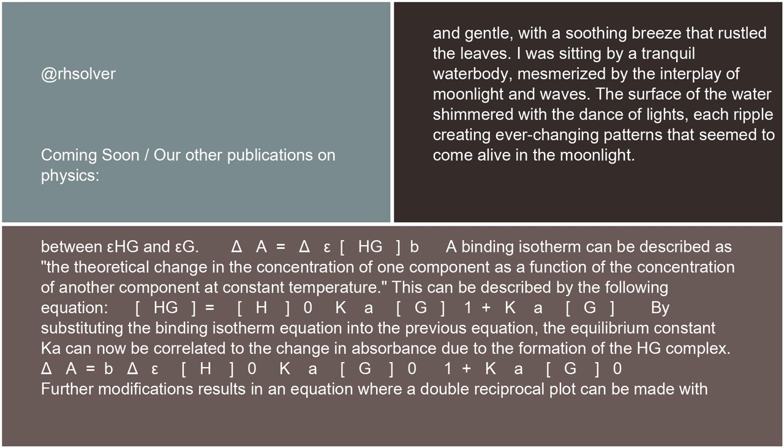A binding isotherm can be described as the theoretical change in the concentration of one component as a function of the concentration of another component at constant temperature. This can be described by the following equation: [HG] = [H0] · Ka · [G] / (1 + Ka · [G]). By substituting the binding isotherm equation into the previous equation, the equilibrium constant Ka can now be correlated to the change in absorbance due to the formation of the HG complex.